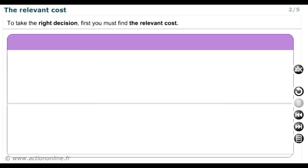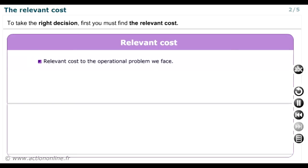In order to make the right decision, the first step is to find the relevant cost. We say that costs are relevant if they are suited to the operational problem we face.